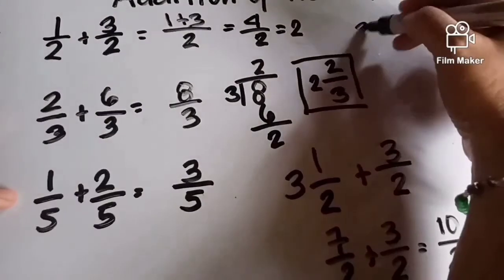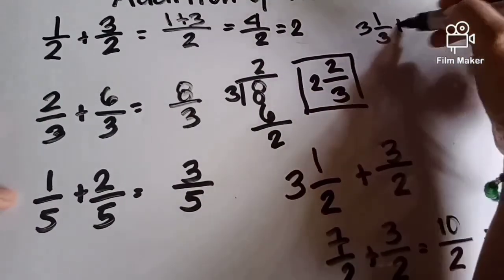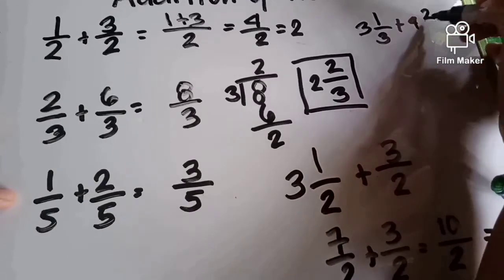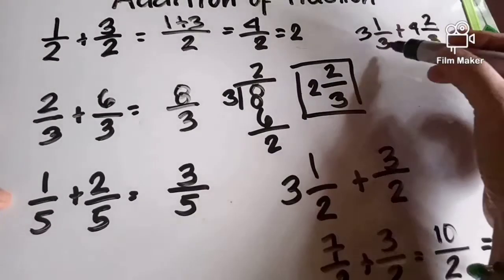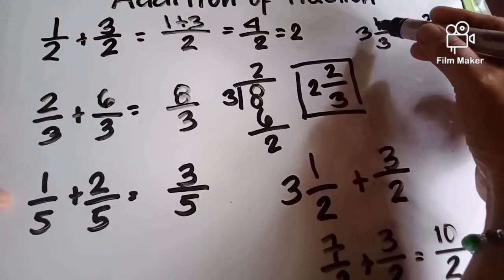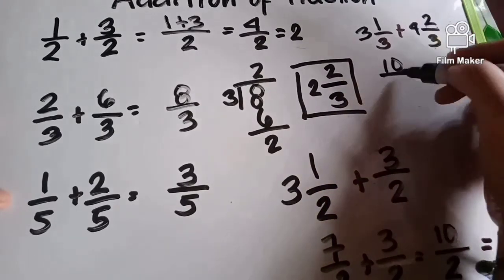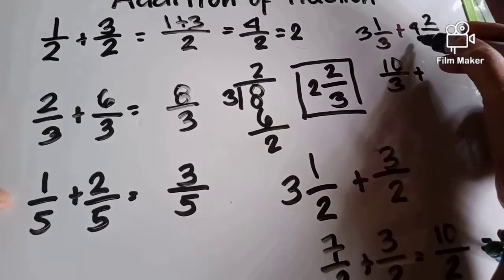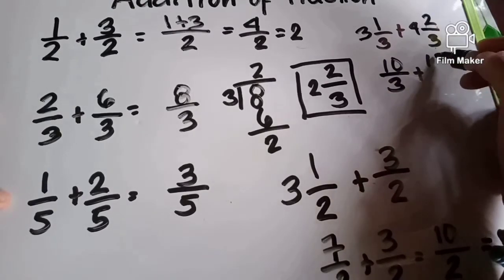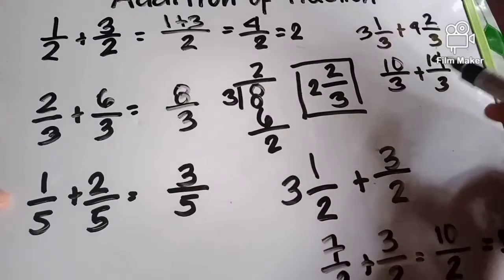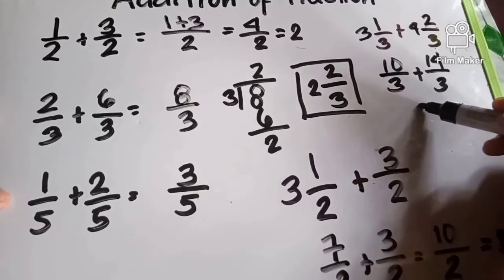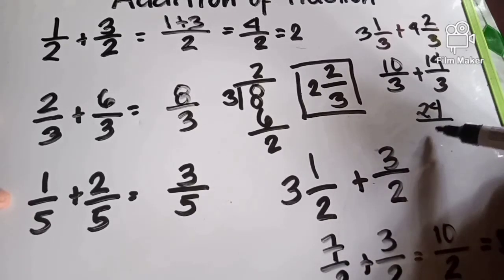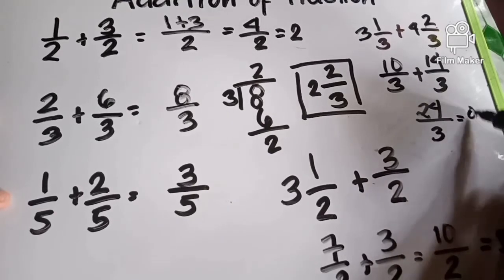Halimbawa naman kung 3 and 1 third plus 4 and 2 thirds. 3 times 3 is 9, plus 1 will be 10 over 3. 4 times 3 is 12, plus 2 will become 14 over 3. So 10 plus 14 will become 24 over 3. 24 divided by 3 will become 8.